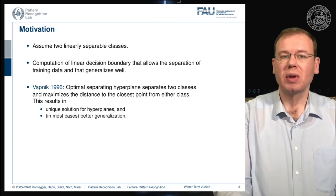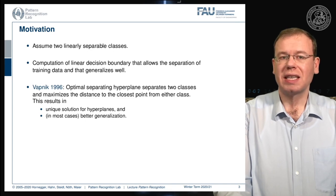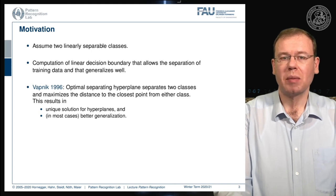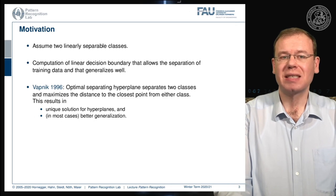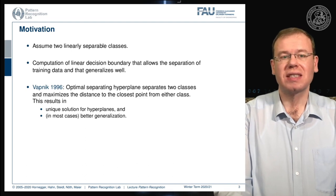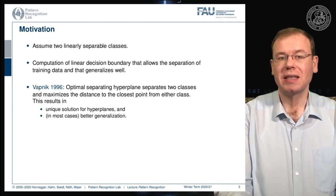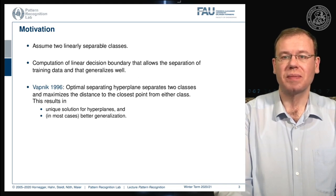This builds on some observations by Vapnik. Already in 1996, he could show that the optimal separating hyperplane separates two classes and maximizes the distance to the closest point from either class. This then results in a unique solution for the hyperplane and, in most cases, better generalization.